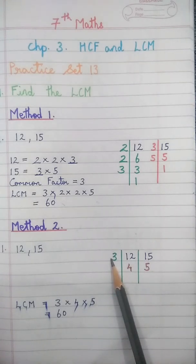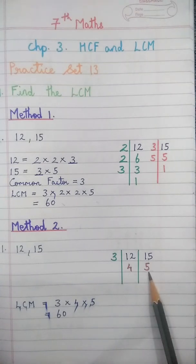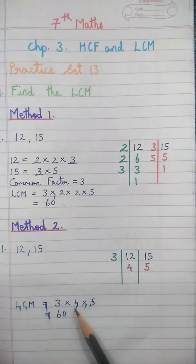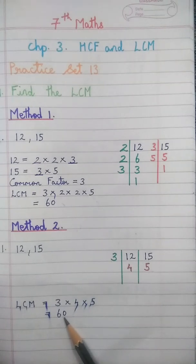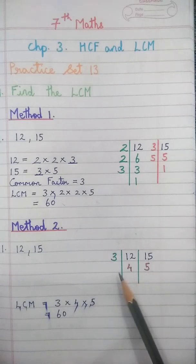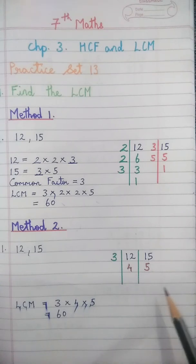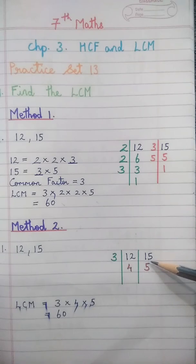The left side factors multiplied by the bottom row gives the LCM. We see that 4 and 5 cannot be further factorized by a common factor, so we leave them as they are. You can choose between the two methods — whichever is convenient for you.